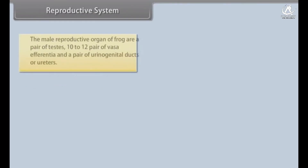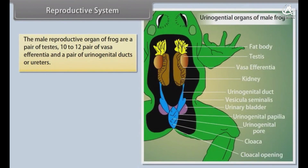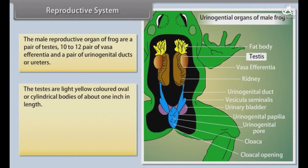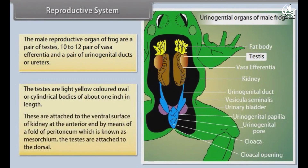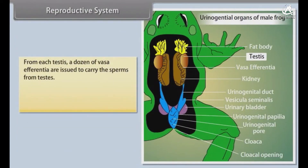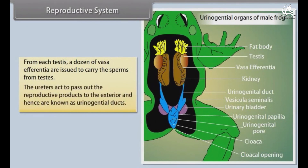Reproductive system. The male reproductive organs of frog are a pair of testes, 10 to 12 pairs of vasa efferentia, and a pair of urinogenital ducts or ureters. The testes are light yellow coloured, oval or cylindrical bodies of about 1 inch in length. These are attached to the ventral surface of the kidney at the anterior end by a fold of peritoneum known as mesorchium. From each testis, a dozen vasa efferentia carry sperm from the testes. The ureters also pass out the reproductive products to the exterior and hence are known as urinogenital ducts.